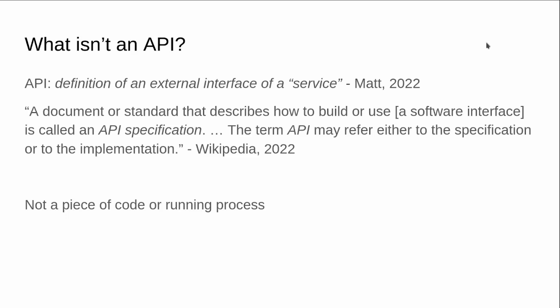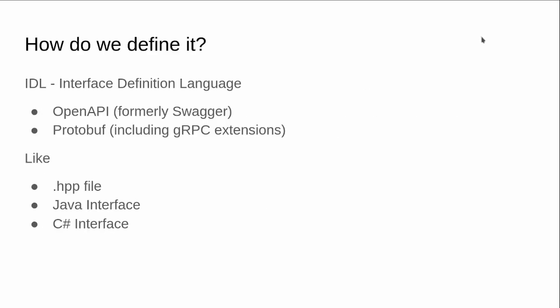People talk about deploying an API, and what they mean is deploying a pod to Kubernetes — deploying some kind of workload to a compute environment. But I think we get confused if we start using the word API for that. An API is defined by an IDL, an interface definition language. You may have come across OpenAPI specs, formerly called Swagger, or Protobuf files which include the gRPC extensions. There's also Avro and Thrift — a lot of protocols have their own IDLs. This is kind of like a C++ header file or a Java interface.